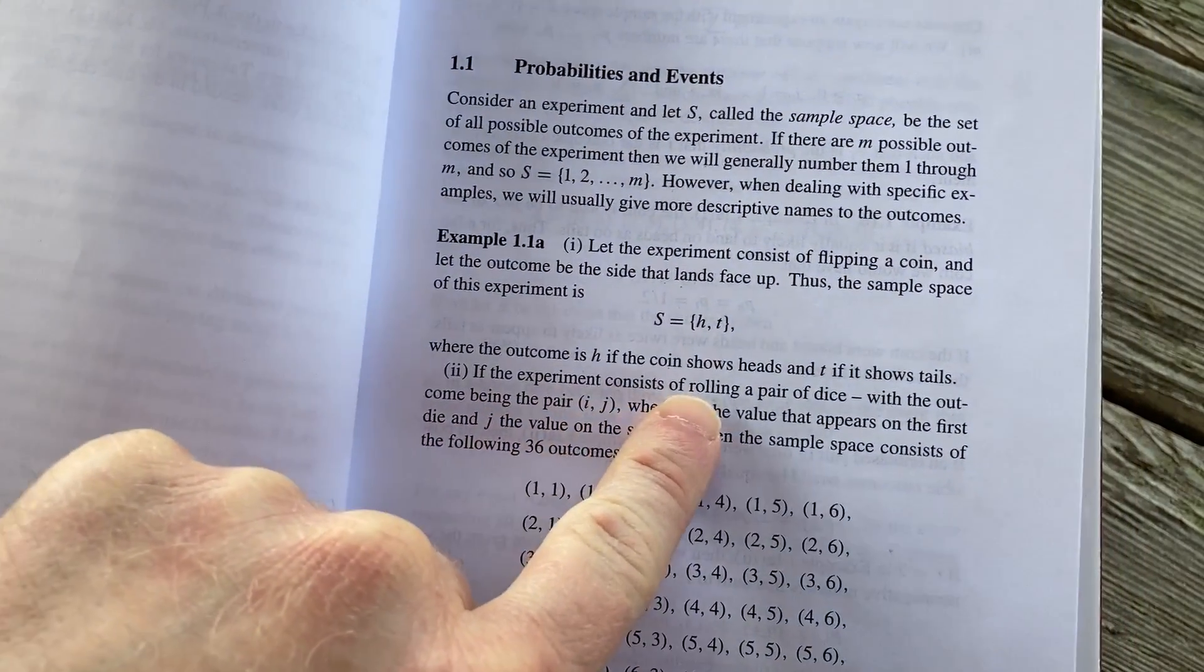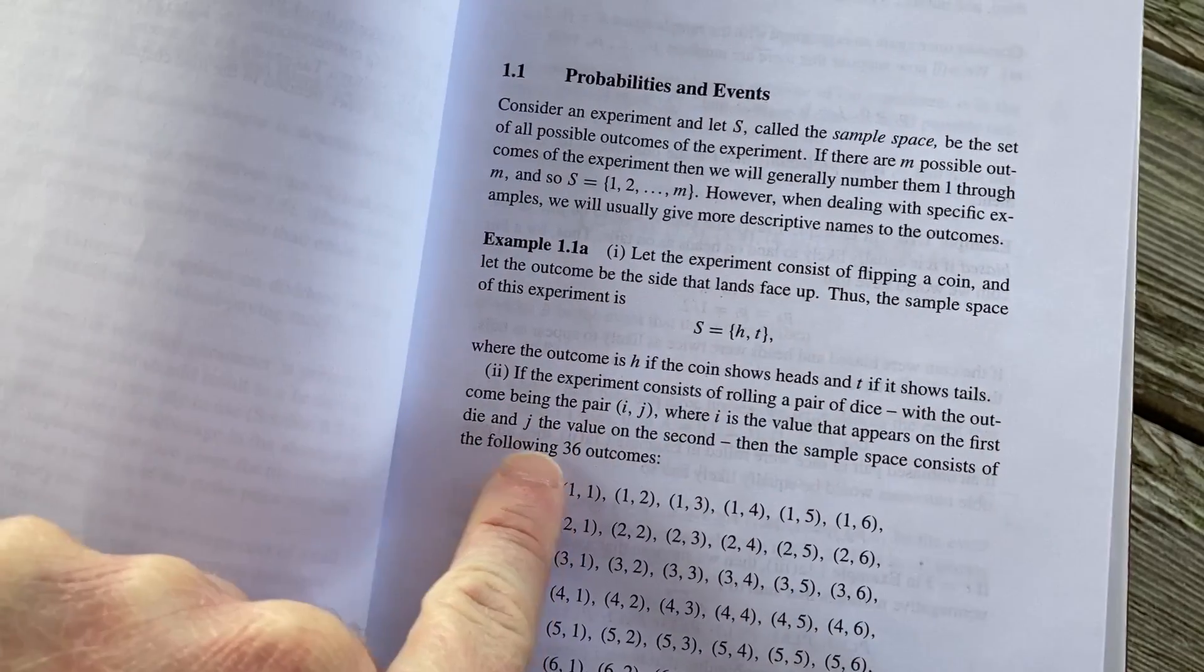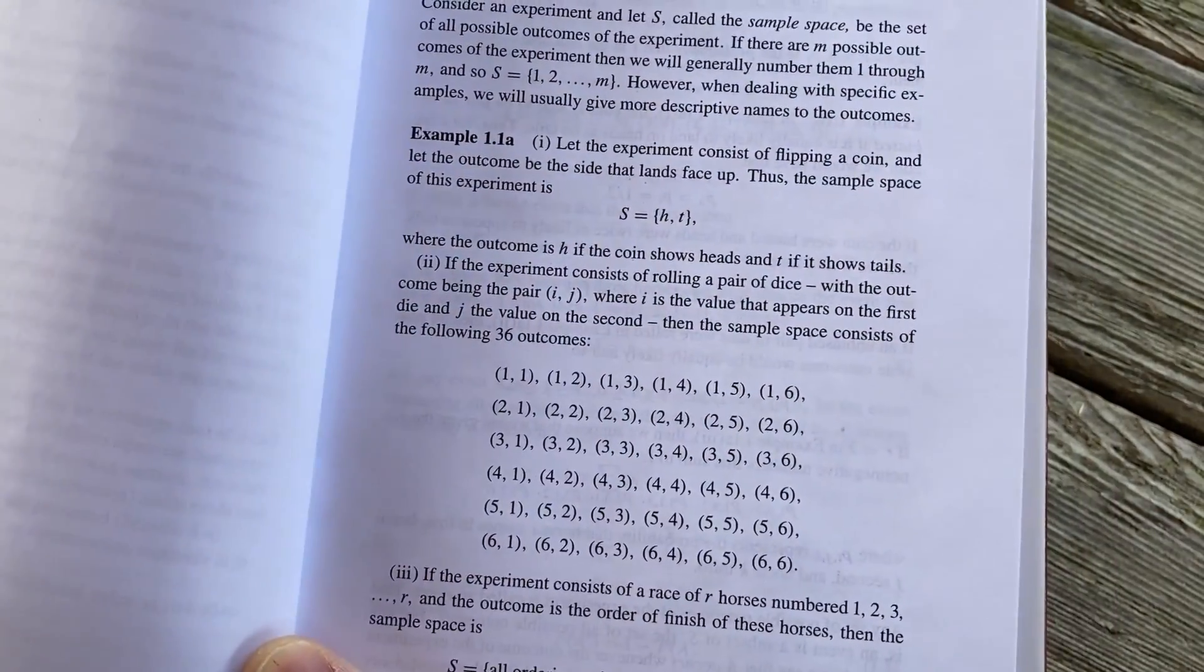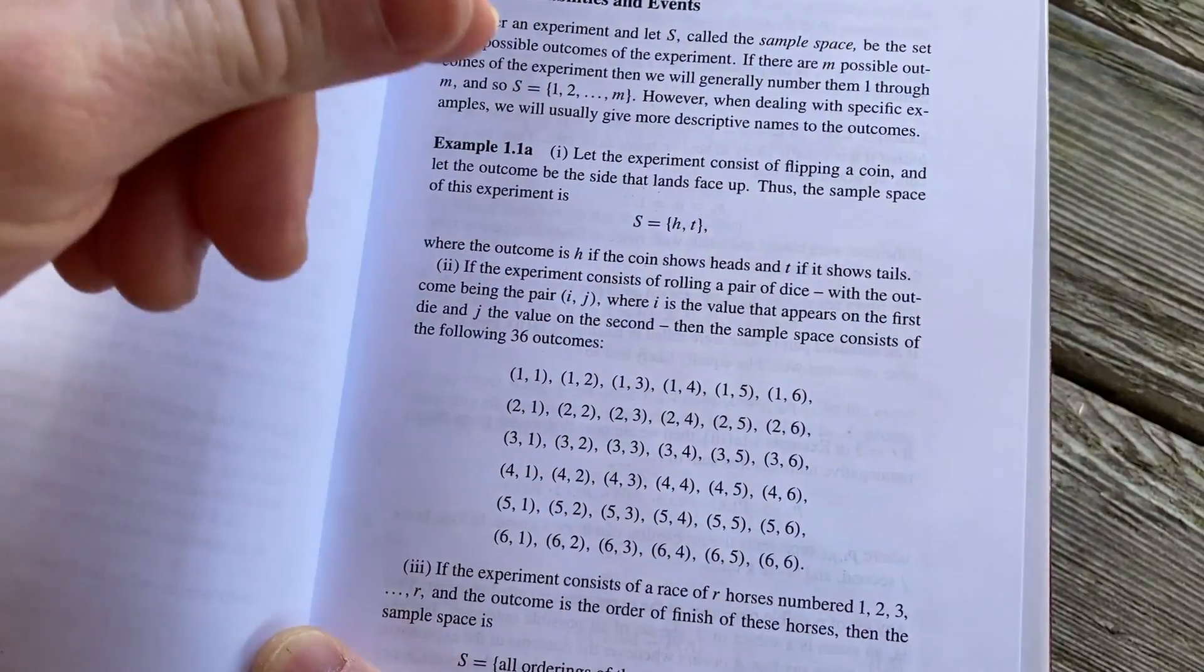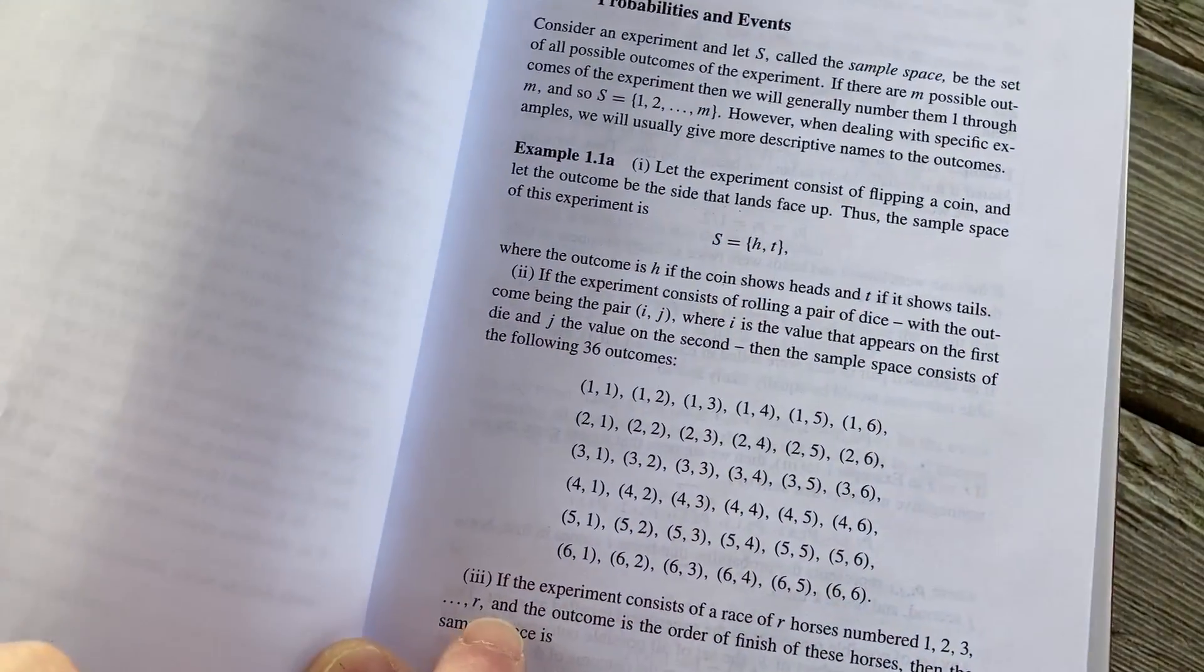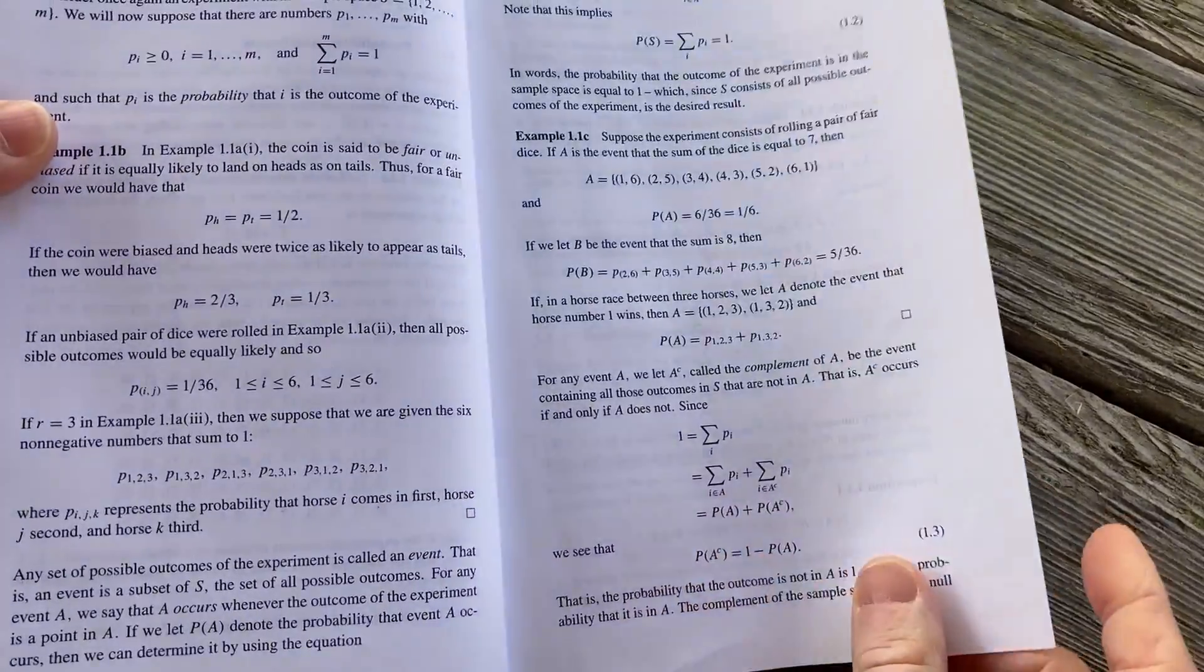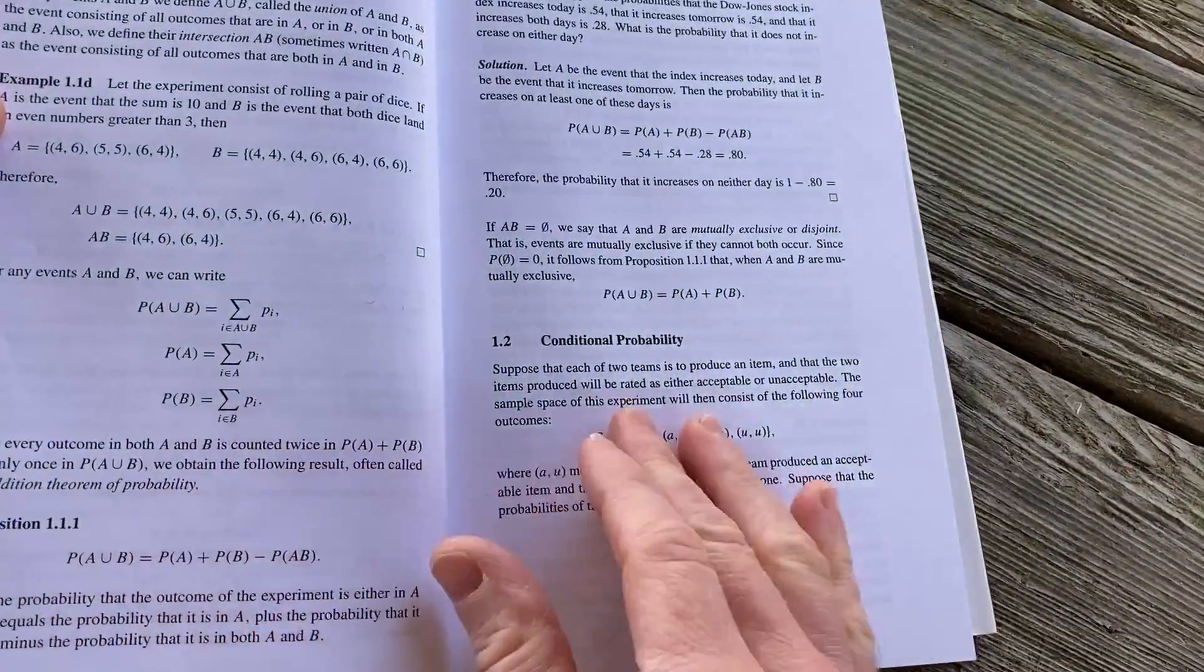If the experiment consists of rolling a pair of dice, with the outcomes being the pair I,J, where I is the value that appears on the first die, and J is the value on the second, then the sample space consists of the following 36 outcomes, right? You have 36 possible outcomes. There's six ways for the first die to land, six ways for the second die to land. The number of ways they can land together is product six times six, which is 36 by the multiplication rule, or you can list all of them out as they've done here. And they continue with examples, and here's some actual examples, where they compute probabilities. They talk about complements, conditional probability.